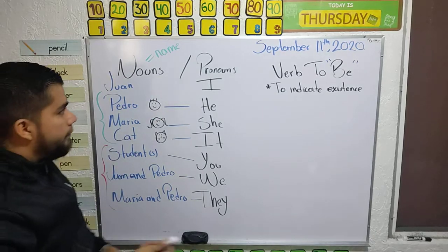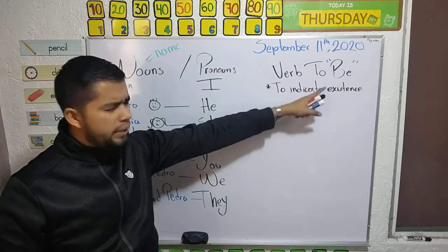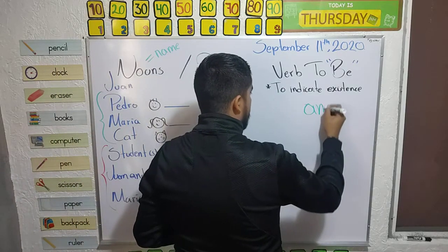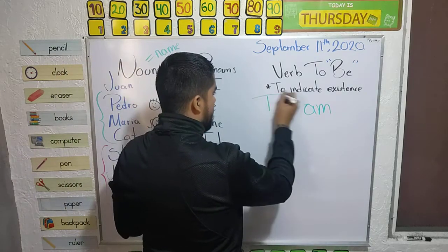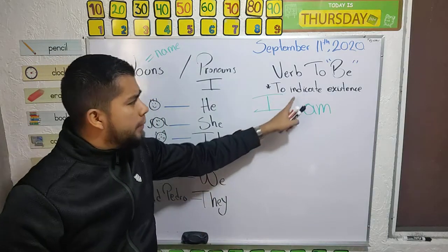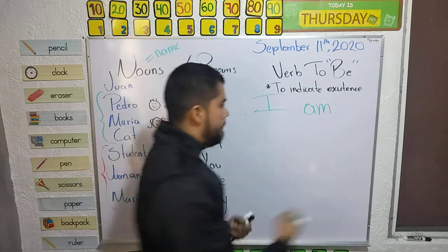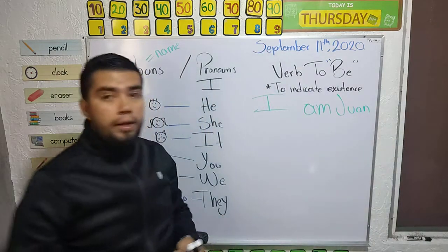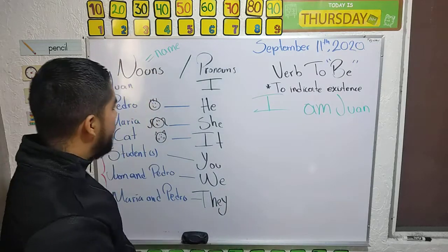If I'm talking about me — 'I be'? No. It's 'I am'. What is the verb 'to be'? Well, the verb 'to be' indicates existence. 'I am' — 'I am Juan'. In this moment, I exist, and I am Juan.